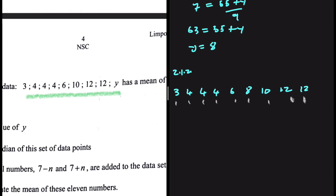We have 9 data points, so our median should be the fifth term. That is 6. We can conclude that the median is equal to 6. On the left of 6 we have 4 numbers, and on the right of 6 we have 4 numbers. So 6 is our median.